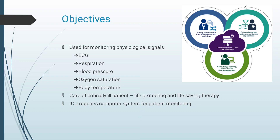Body temperature ranges from 98 degrees Fahrenheit to a little over 99 degrees Fahrenheit. The system also cares for critically ill patients. It is also known as life-protecting and life-saving therapy, and it is required in the intensive care unit for monitoring patients.